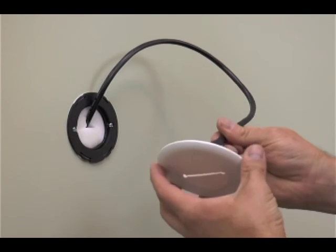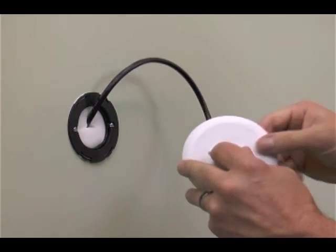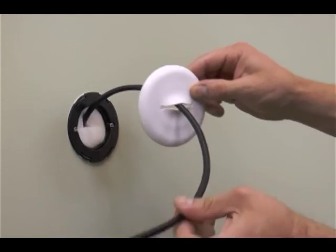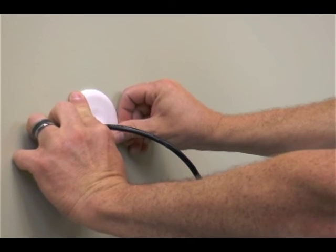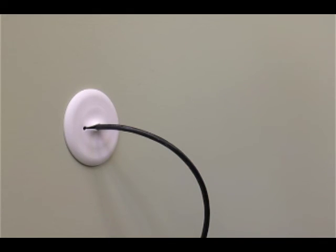Push the low voltage cords through the rubber membrane in the faceplate from back to front. Align the faceplate to the grommet with the slot oriented horizontally. Push until all four snaps engage with the grommet. Repeat this step for the other grommet.